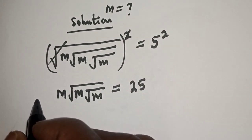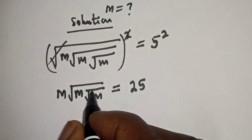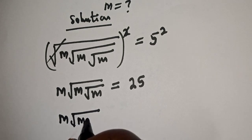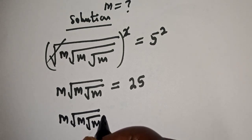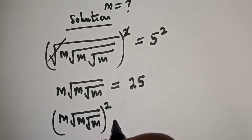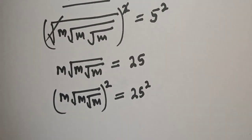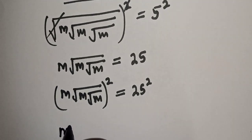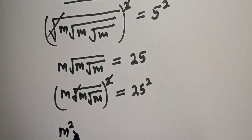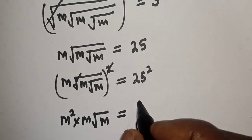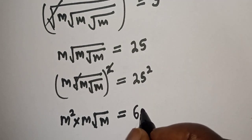Now let's square both sides again. m times square root of m times square root of m, all squared, is equal to 25 squared. This gives us m squared multiplied by m times square root of m, which is equal to 25 squared, which is 625.